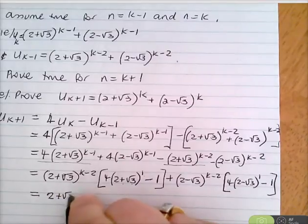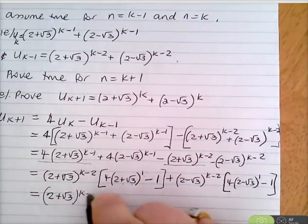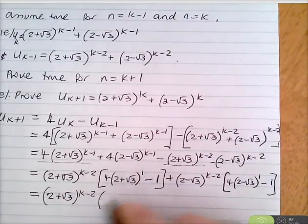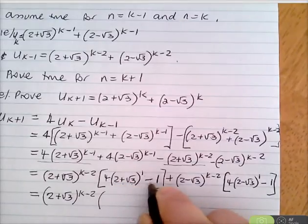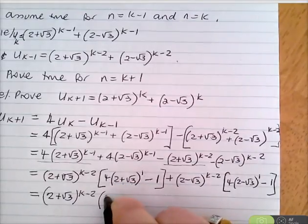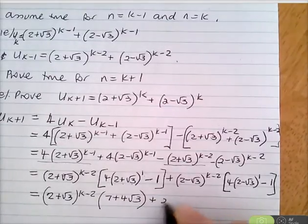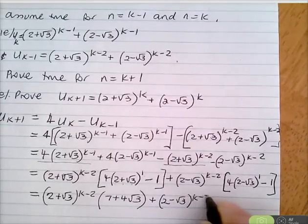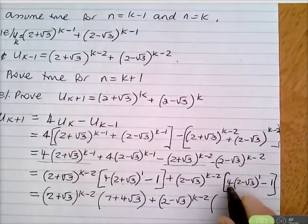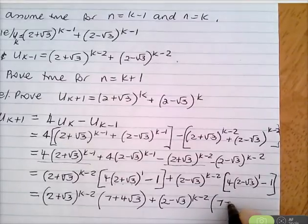Simplifying the brackets: 4(2+√3) − 1 = 8 + 4√3 − 1 = 7 + 4√3, and 4(2−√3) − 1 = 8 − 4√3 − 1 = 7 − 4√3.